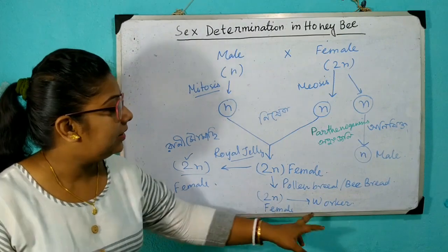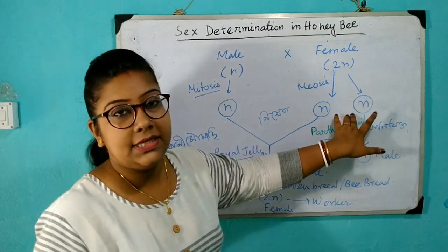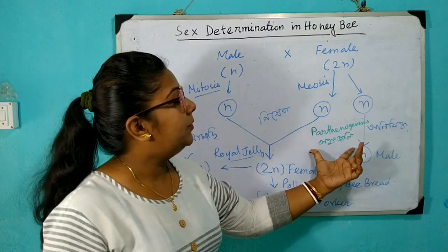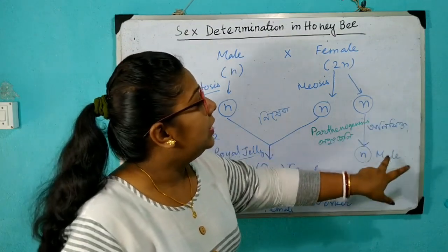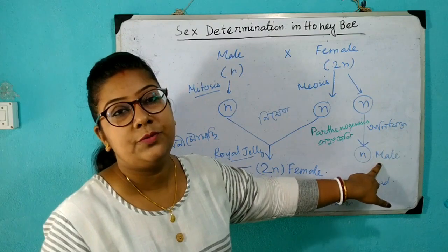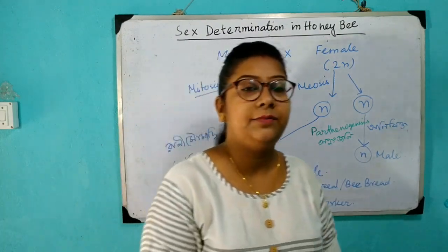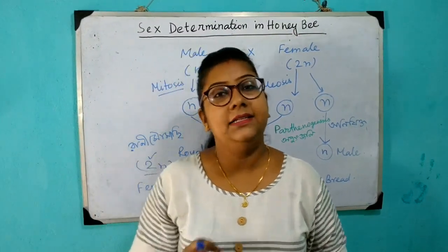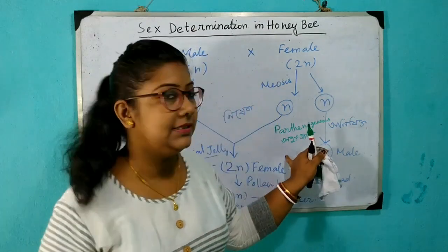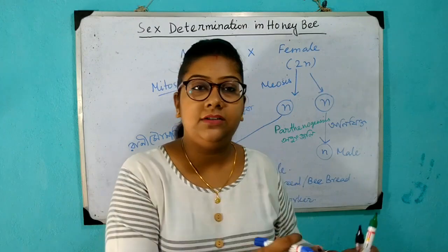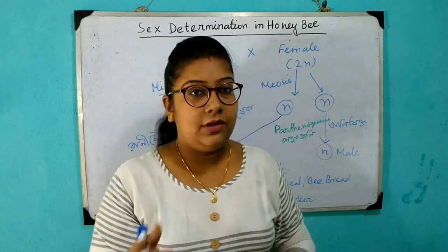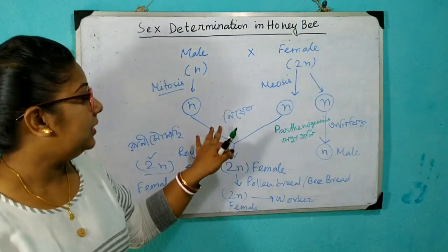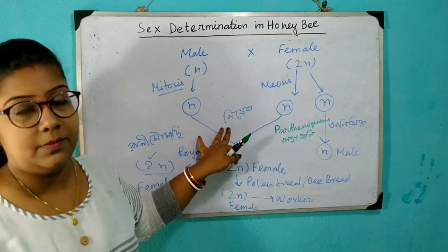কিন্তু তারা বন্ধ্যা, তাদের জনন অঙ্গ তৈরি হয় না। এই জে অনিষিক্ত অবস্থায় থেকে তারা শরাশরি মেল ফর্ম করে এবং পার্থেনোজেনেসিস হয় — এই বিষয়ে এখানে ছোট ছোট বেশ কিছু প্রশ্ন থাকে, বিশেষত পার্থেনোজেনেসিস এবং যে কন্টেন্ট।